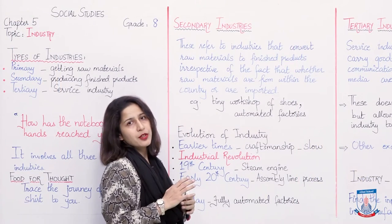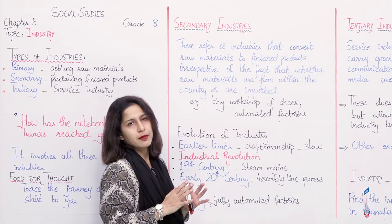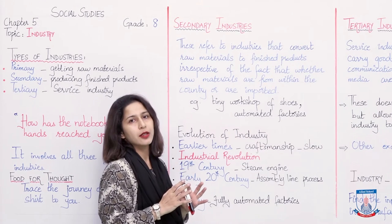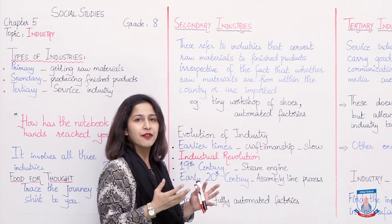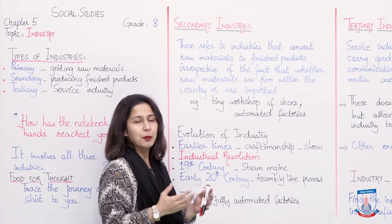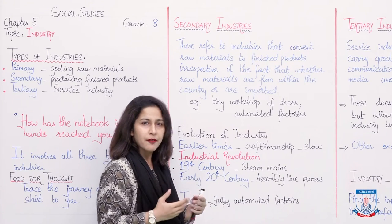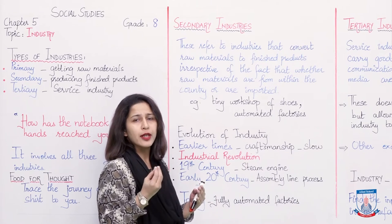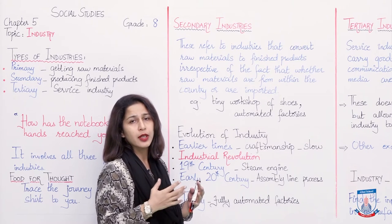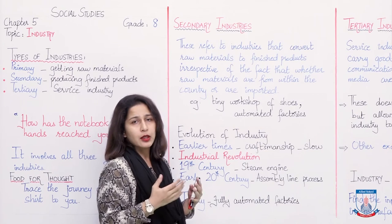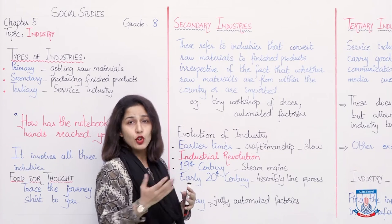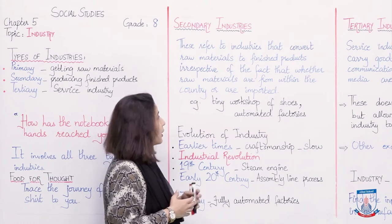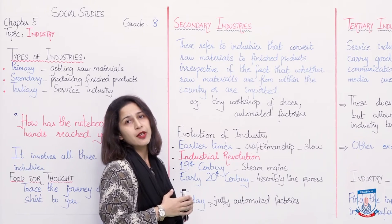Primary industries — we discussed in our last lesson how in primary industries raw materials are extracted. We use different methods from our own land to get different types of raw materials, like wheat, minerals, rocks, marble, even salt — salt is also present in the earth's crust. Today, we'll be discussing secondary industries.